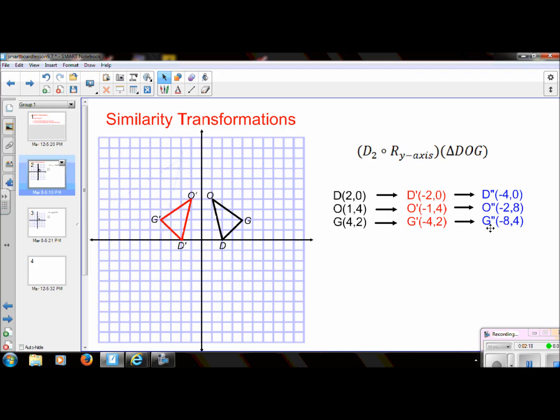So if I were to take these over to my graph and graph my new coordinates, this would be my new image. And again, we're doing exactly what we've been doing. The only thing to take note of is that this triangle that we started with is similar to what we ended up with.